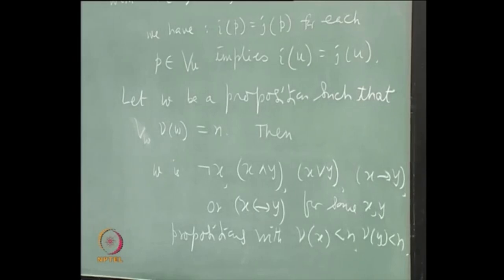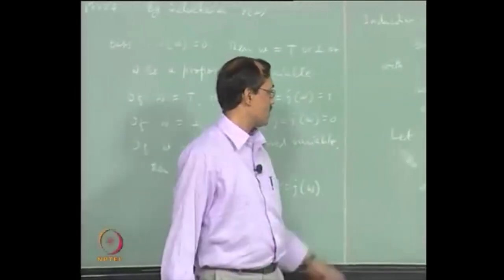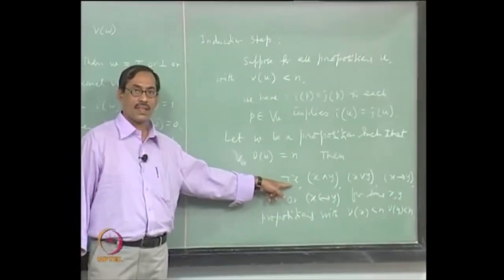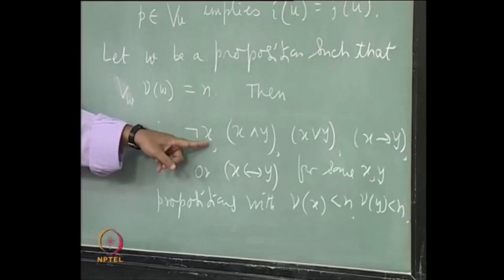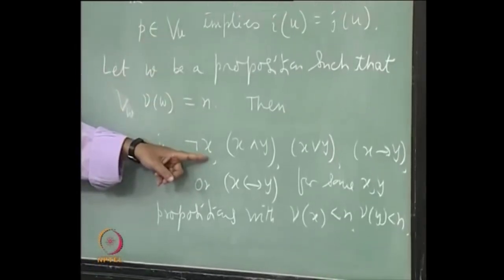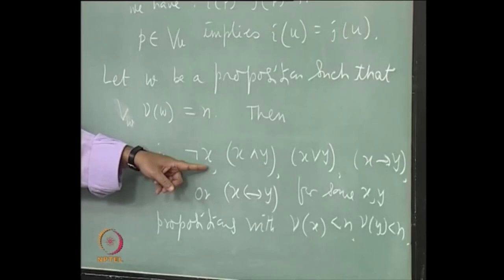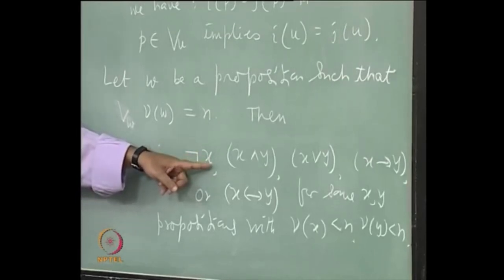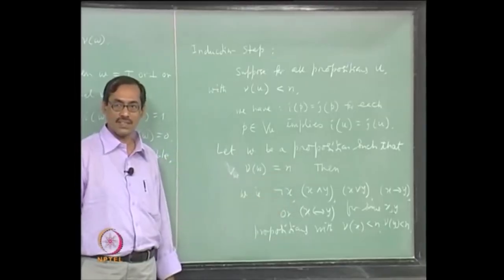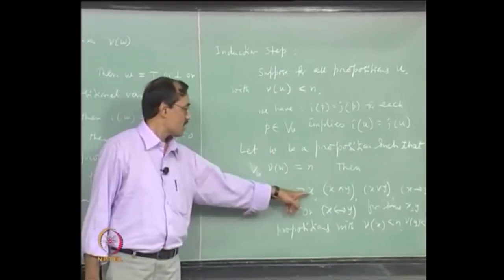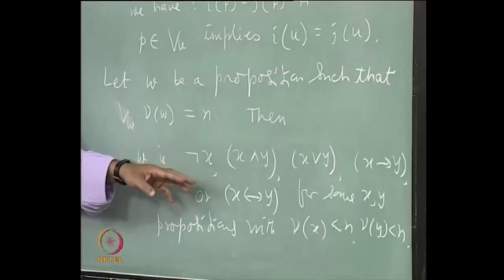Now you can complete it. Let us see the first case. Suppose w is not x. Now nu of w is n, so nu of x is less than n. Apply the induction hypothesis: I of x equals j of x. Because all variables occurring in x form a subset of variables occurring in w, you can apply the induction hypothesis. Then by definition of not, I of not x equals j of not x.